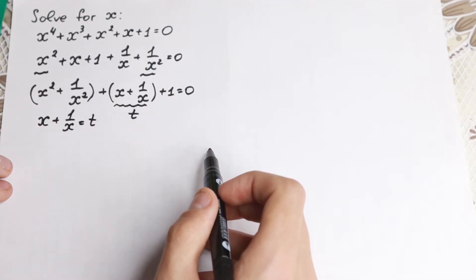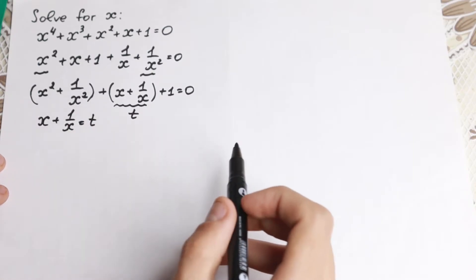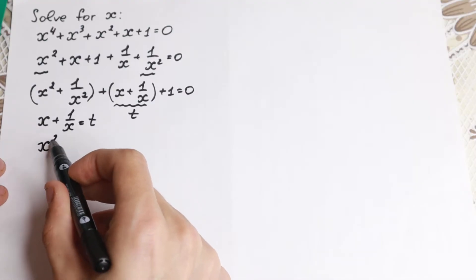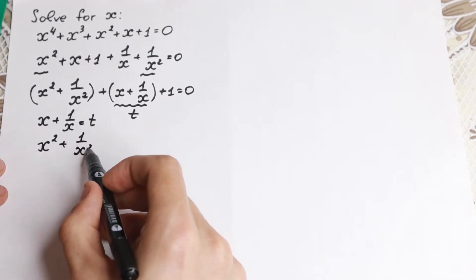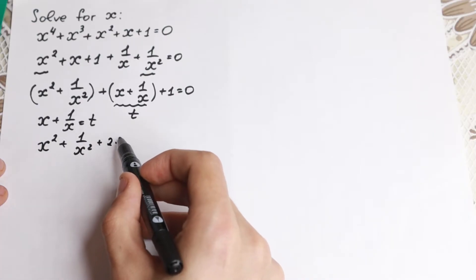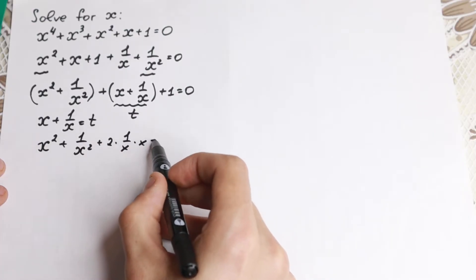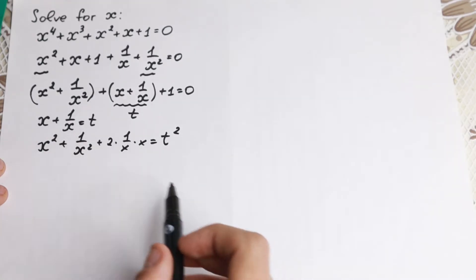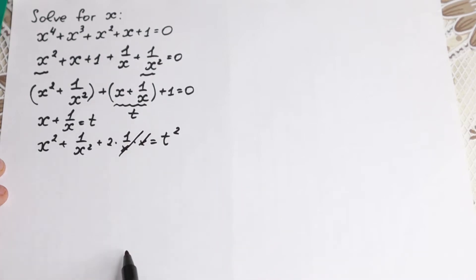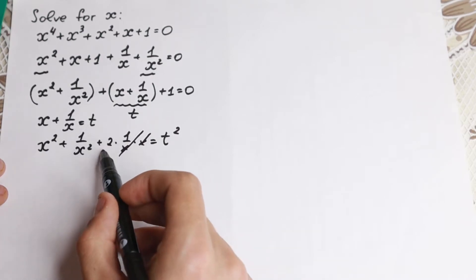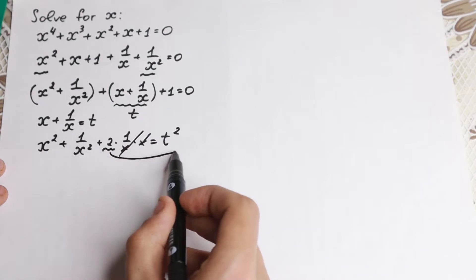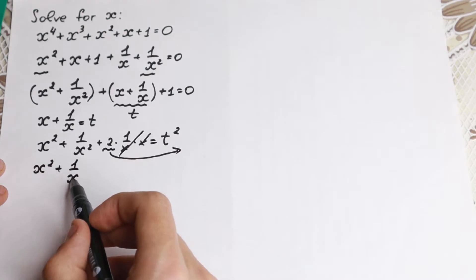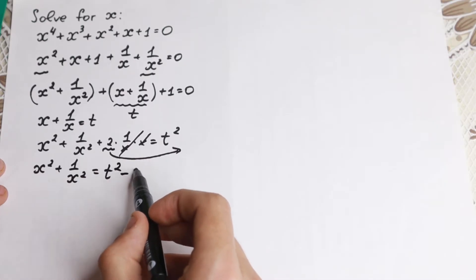But what about the x² + 1/x² term? It's not simply t². If we square both sides of t = x + 1/x, we get x² + 1/x² + 2 = t². The 2·(1/x)·x cancels to give 2, so bringing it to the right: x² + 1/x² equals t² minus 2.